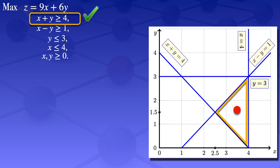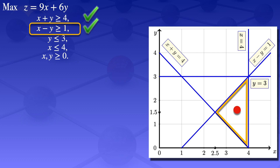Moving to the next constraint: x − y ≥ 1. With x = 3.5 and y = 1.5, we get 3.5 − 1.5 = 2, which is ≥ 1. Satisfied. Next, y ≤ 3: our y is 1.5, and 1.5 < 3, so that constraint is also satisfied.